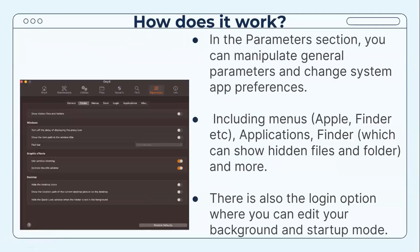In the Parameters section, you can manipulate general parameters and change system and app preferences. This includes menus such as your Apple menu or Finder menu, and more. Within Finder, you can show hidden files and folders. There's also the Login option where you can edit your background and startup mode, as well as Miscellaneous and Dock options for editing graphic effects, desktop, and window display.